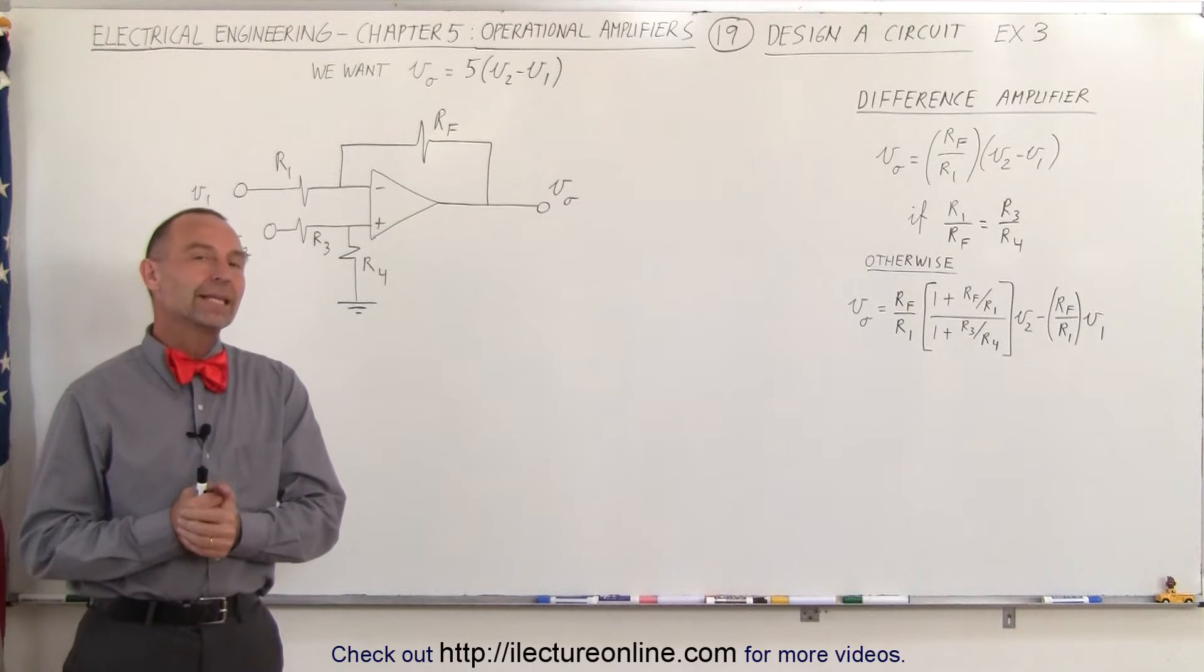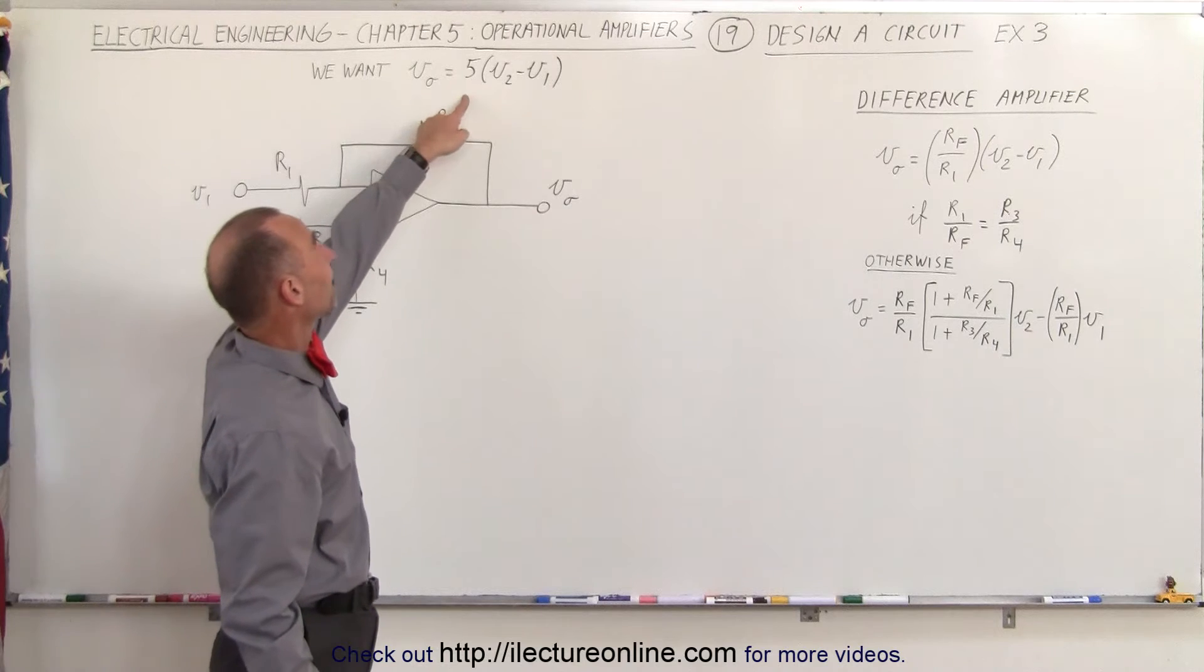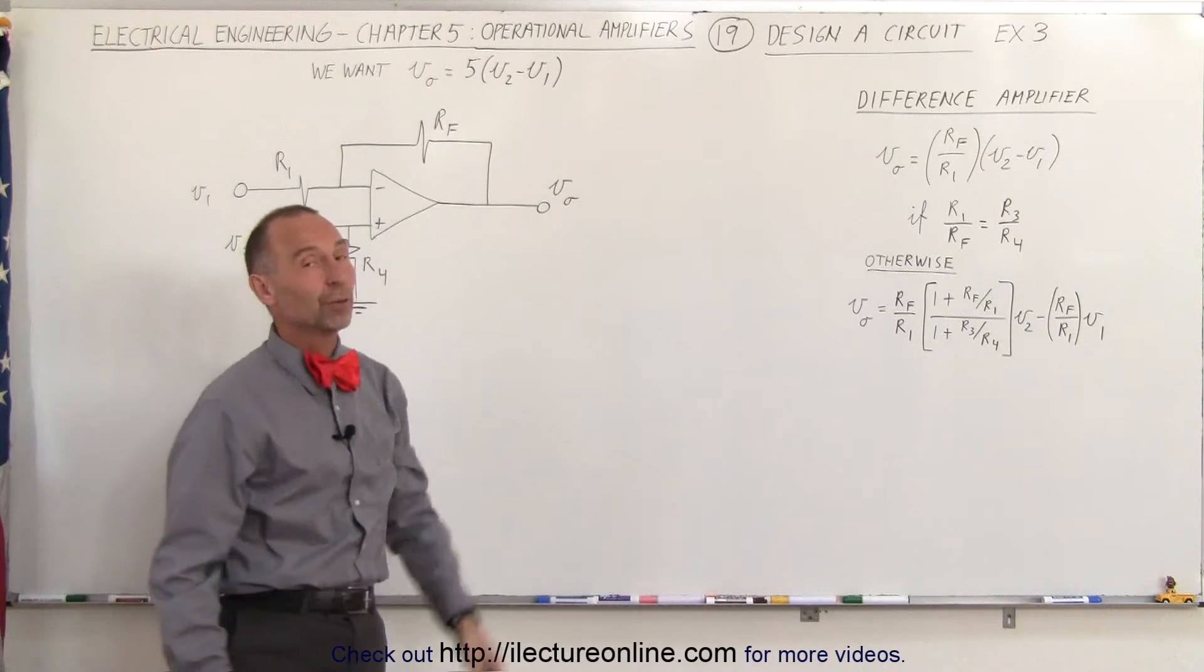Welcome to ElectronLine, and here we're trying to find an output where the output voltage is equal to 5 times the difference between V2 and V1.